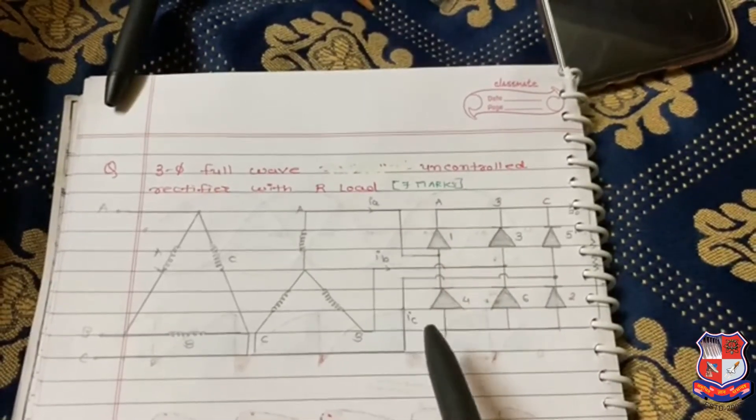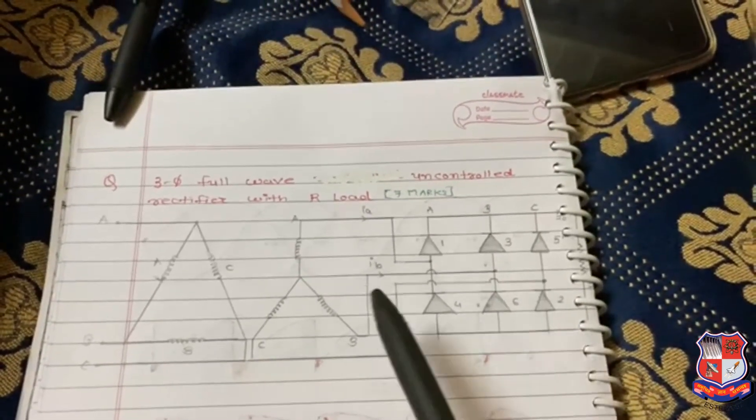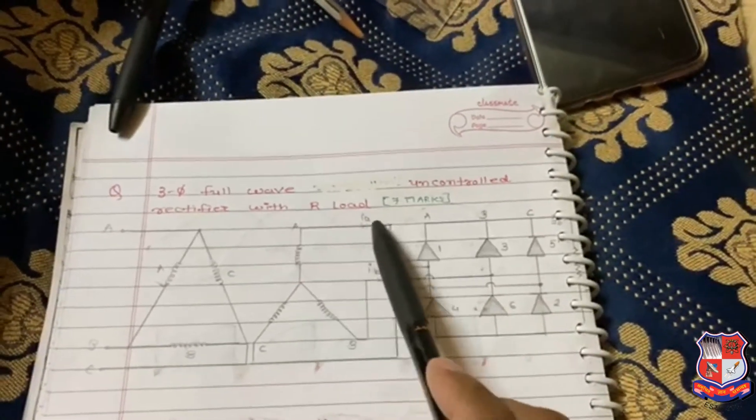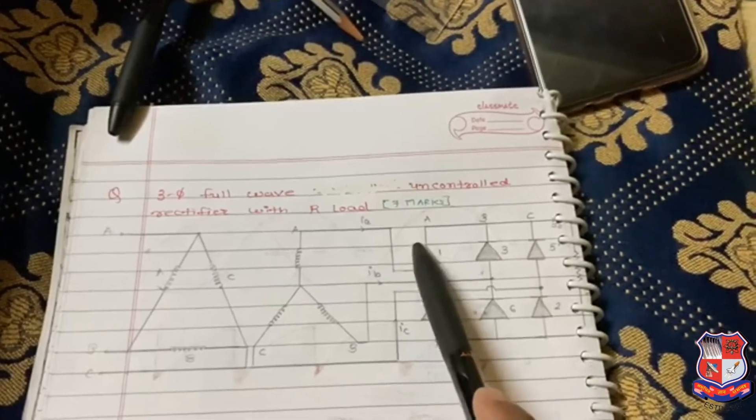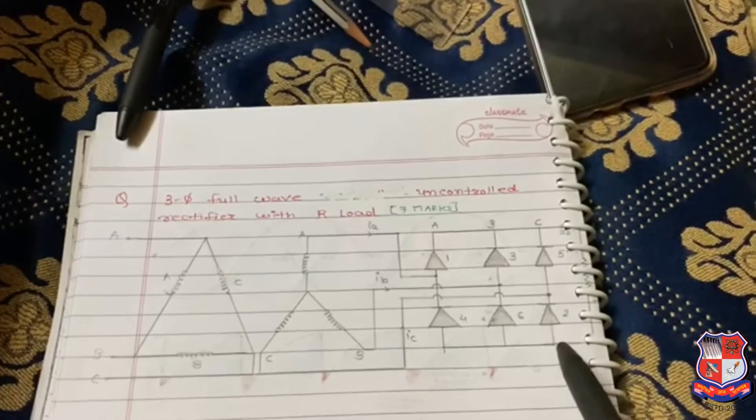The load current I0 will become the summation of Ia, Ib, and Ic. Suppose I assume that at a time switch number one and switch number two will be in on condition. So our path will be complete from switch number one of phase A to the load, load to switch number two of phase C.